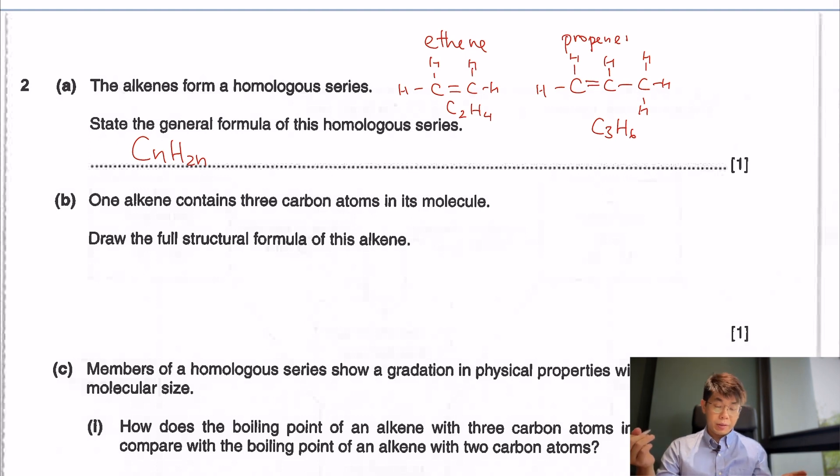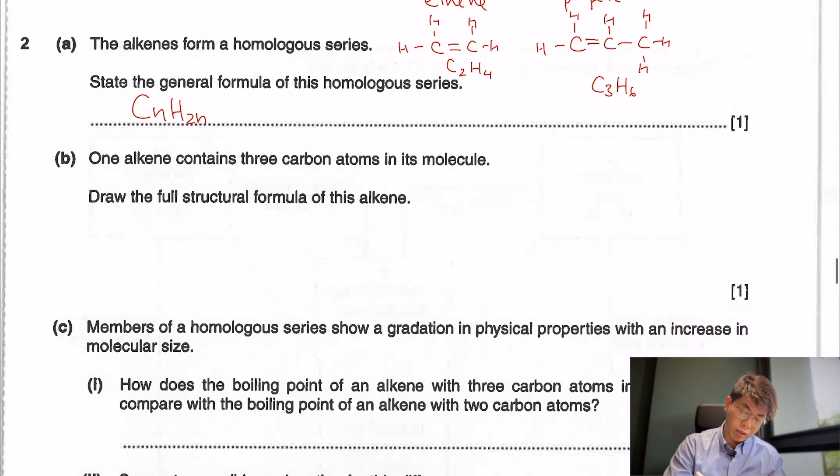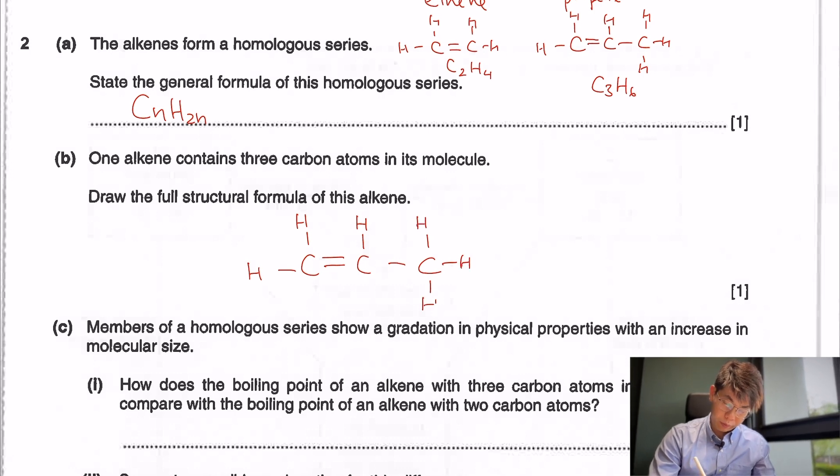One alkene contains three carbons in its molecule. Draw the full structural formula. So one, two, three carbons with a double bond. The one on the left has two bonds, so add two more hydrogens. The one in the center has three bonds, so one more hydrogen. And the one in the last part has one bond, so another three hydrogens. So we fill the rest up with H.